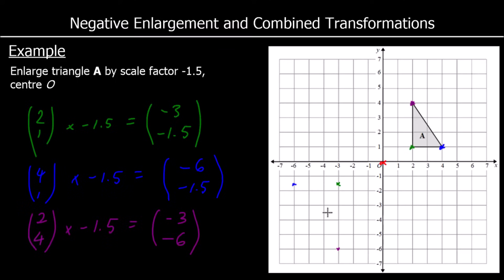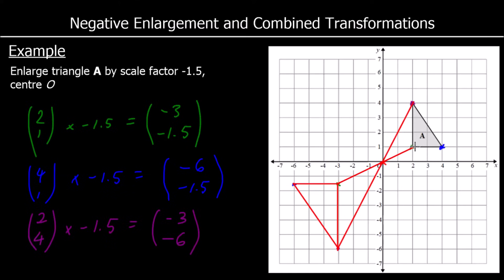So I've got all three corners of the triangle and I'm going to join them up. Again I can check my answer: the purple point to the purple point, green point to green point, and blue point to blue point all go through the centre of enlargement. So that is an enlargement by a scale factor of minus 1.5.